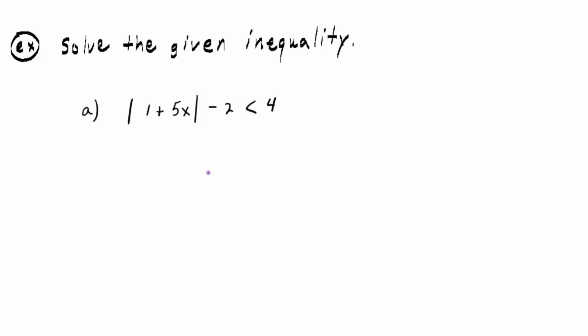As with the equations, you have to isolate the absolute value. So how could I isolate the absolute value? The absolute value of 1 plus 5x, how can I get that by itself? We have the absolute value of 1 plus 5x minus 2 is less than 4. How can I get the absolute value of 1 plus 5x by itself?